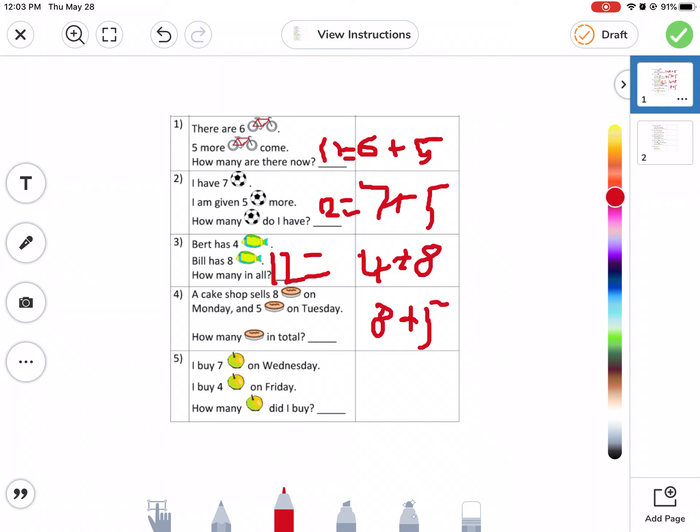Then we need to work on that five. Okay. I buy seven peaches on Wednesday. I buy four on Friday. How many did I buy? Seven peaches on Wednesday. I buy four on Friday. Seven plus four. Eleven equals.